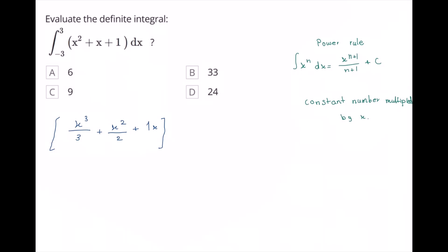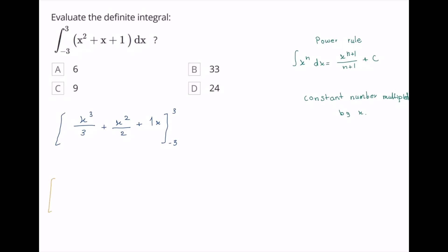With having the limits from negative 3 to 3, now between two brackets with a minus sign in between, substitute the following limits. We will start with the limit 3: 3 to the power of 3 over 3 plus 3 to the power of 2 over 2 plus 1 times 3, minus negative 3 to the power of 3 over 3 plus negative 3 to the power of 2 over 2 plus 1 times negative 3. Plug this in the calculator to add up to a solution of 33.